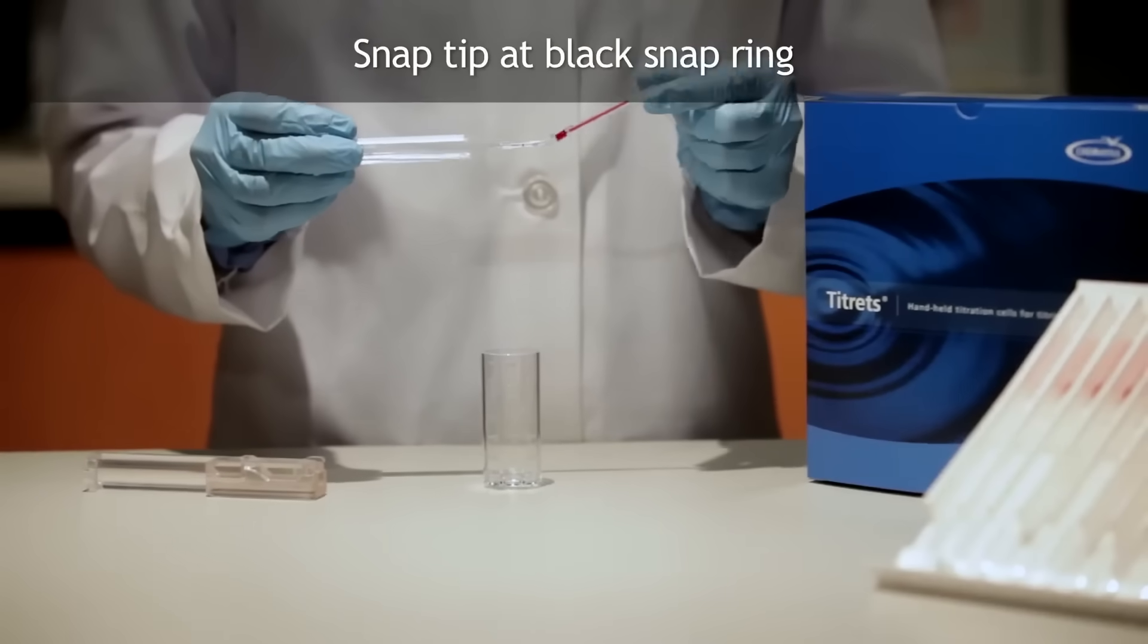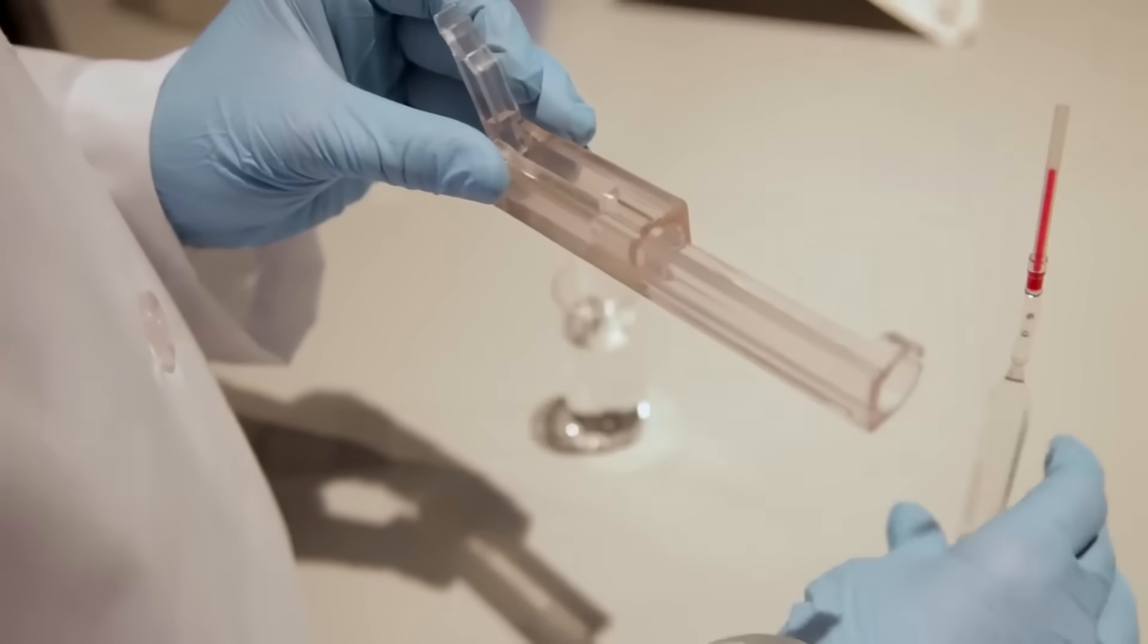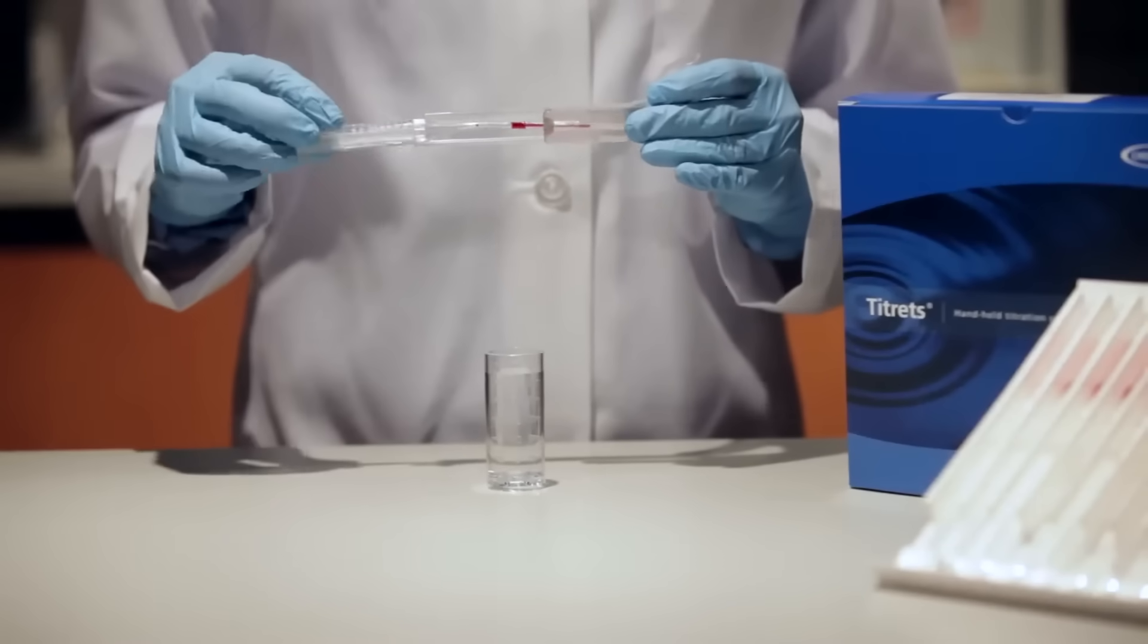When the tip is snapped, the flexible tubing will remain in place on the tapered neck of the ampoule. Lift the control bar and insert the titret assembly into the titretter.